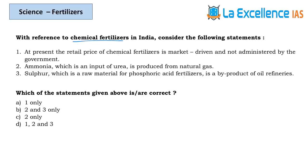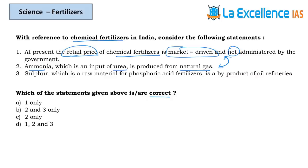The next question is about chemical fertilizer usage in India — identify the correct statement. Statement 1: retail price of chemical fertilizer is market-driven and not administered by the government. Urea is also a chemical fertilizer and is the most used fertilizer in India; the government heavily subsidizes it. So statement 1 is wrong — urea is not market-driven; only urea is administered by the government.